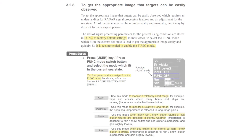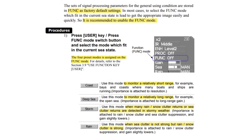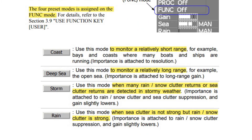The four preset modes assigned in FUNC mode are: Coast — use this mode to monitor a relatively short range, for example bays and coasts where many boats and ships are running; importance is attached to resolution. Deep Sea — use this mode to monitor a relatively long range, for example the open sea; importance is attached to long range gain.